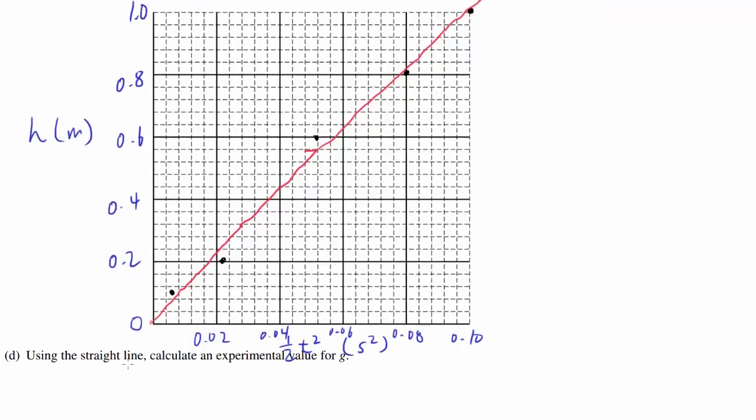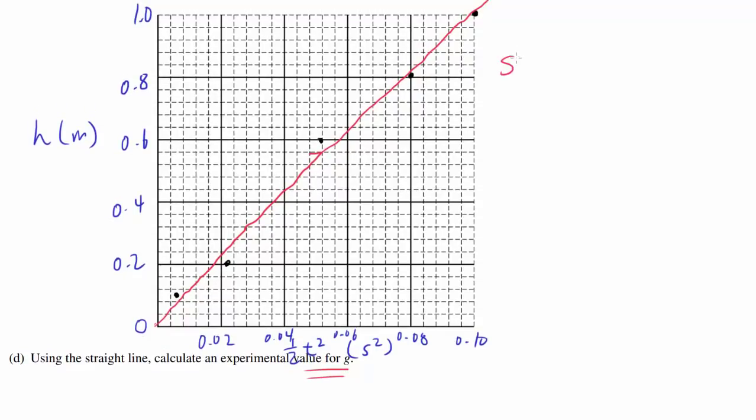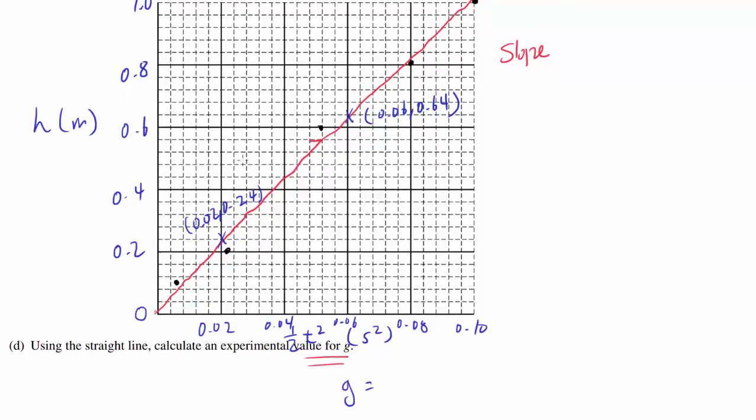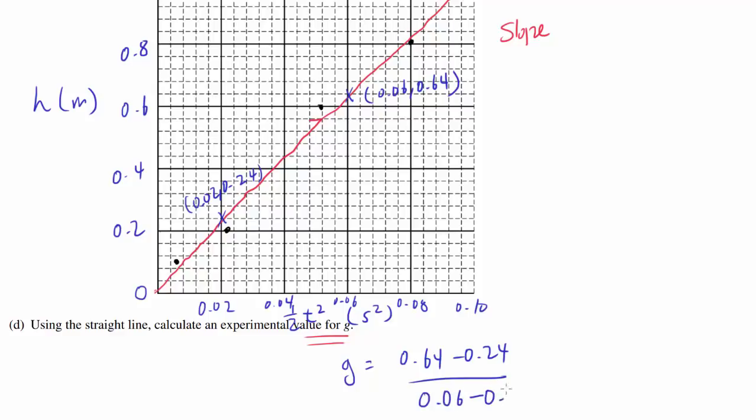Using the straight line, we have to calculate the experimental value of g, where g should be the slope of this line. Let's pick two points that seem to be on the line: this point at 0.02, 0.24 and this point at 0.06, 0.64. Our slope, or the experimental value for g, is (0.64 - 0.24) / (0.06 - 0.02), which is 0.40 over 0.04, also known as 10 meters per second squared. That's pretty close to the actual value of around 9.81, so we should be pretty confident that our answer is good.